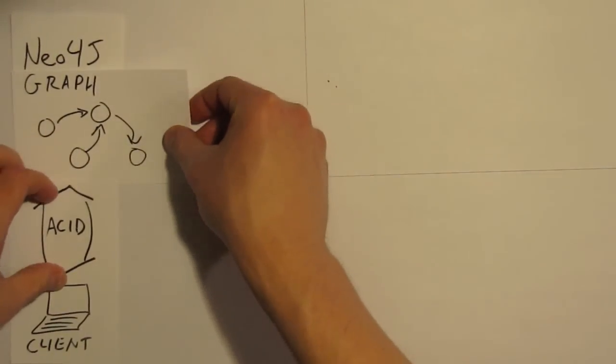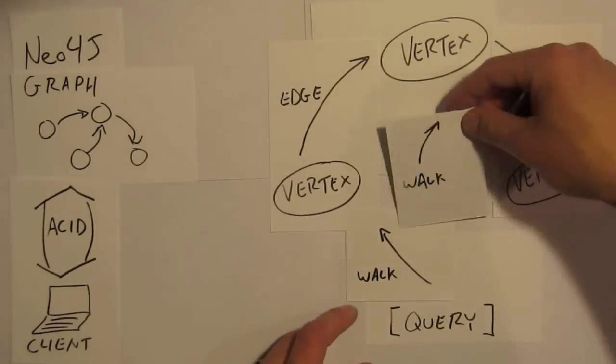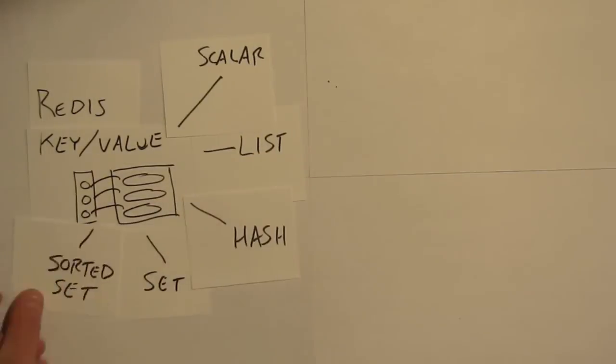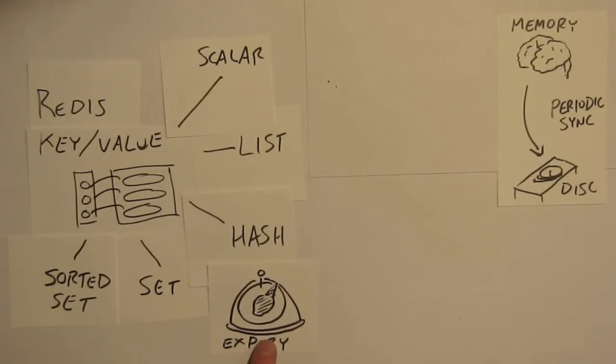Neo4j is ACID-compliant, this graph database really shines. You query through edges that connect to vertices, no joins. Redis key-value holds rich data structures, RAM-based or writes them to disk. Expires for caching, pub-sub message passing.